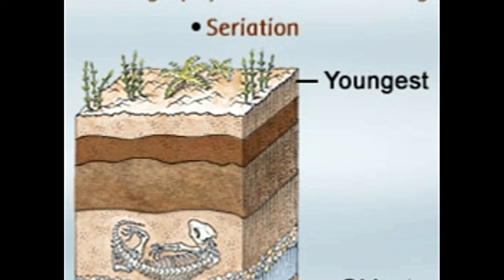Seriation: this method is mainly used for establishing the chronological sequence in which certain artifacts existed. This technique makes it possible to understand the changes that have been modified over time. Seriation is further classified into evolutionary seriation, frequency seriation, and contextual seriation, to list a few. Time markers: man-made objects or artifacts are used for relative dating. They can also be called diagnostic objects because they indicate a time period during which they were developed and used. Many artifacts such as ceramics, vessels, or bottles used in the prehistoric era are discovered at excavation sites. From the make of these artifacts, it is possible to identify the time period during which they were made.